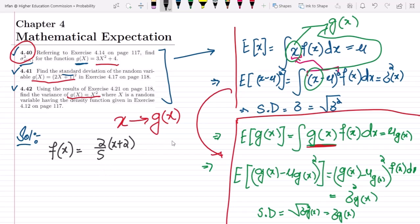This is for x greater or equal to 0 and less than equal to 1 and it is 0 elsewhere. These are the values we have to use. Now g of x is 3x square plus 4.